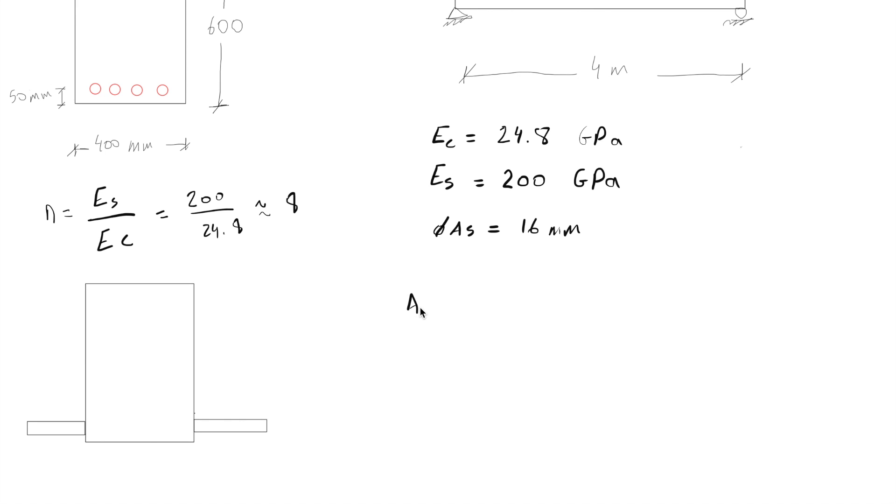Now we can say area converted equals to (n-1) times area of steel, which equals to (8-1) multiplied by π/4 multiplied by 16 squared for the diameter of the rebar, which equals to 5,630 mm².